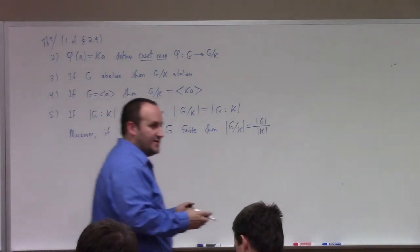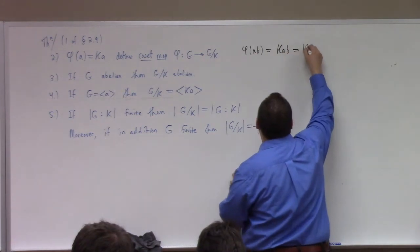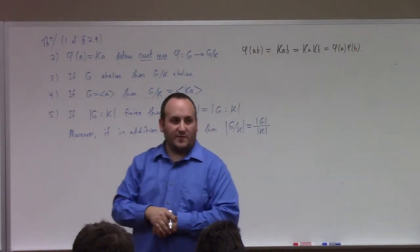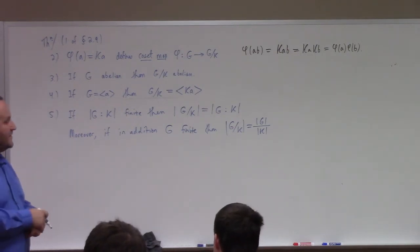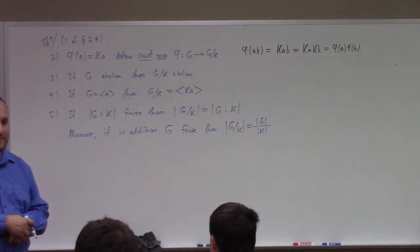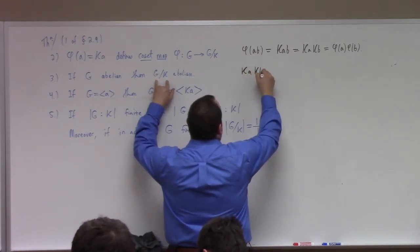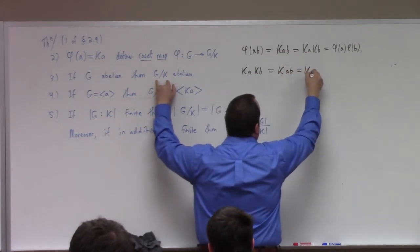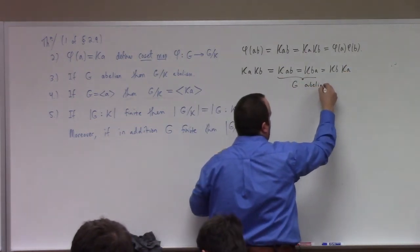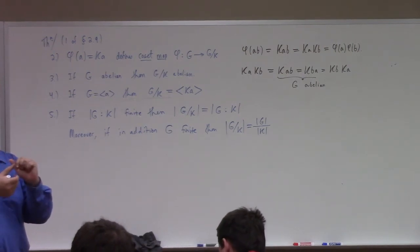Let's prove these things. φ(ab) = Kab = Ka·Kb = φ(a)φ(b). Yeah, it's a homomorphism. Surjectivity: you give me a right coset, φ(x) — there you go. For abelian: if G is abelian, KA·KB = Kab = Kba = KB·KA. If G is abelian, we can commute the representatives and consequently commute the cosets, so the factor group is likewise abelian.